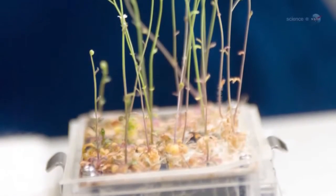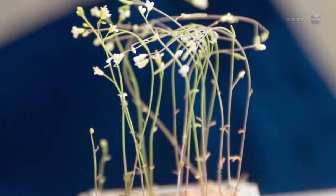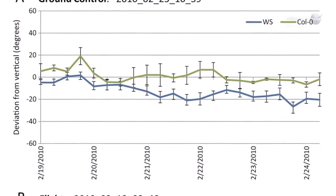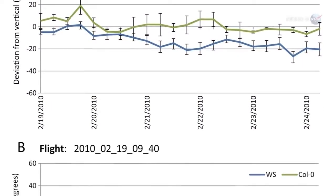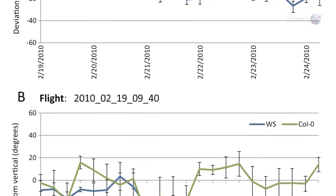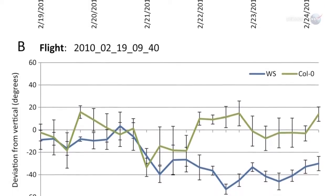Arabidopsis has proven remarkably adaptable to the space environment, notes Furl. The details are not yet fully understood, but thanks to TAGES, data at the cellular and genetic levels are now available for study.